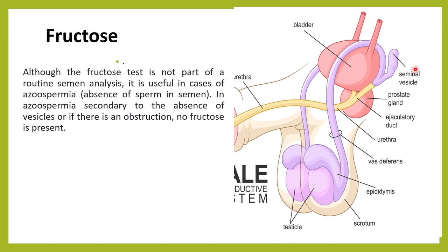Fructose is mainly produced in the seminal vesicles. We see it in the semen analysis report, but the majority of the time, fructose testing is done whenever there is azoospermia — that is, no sperms in the semen. In azoospermia secondary to absence of the seminal vesicle or if there is an obstruction, there will be no fructose. If there is an obstruction, there will be no sperms coming and also no fructose.